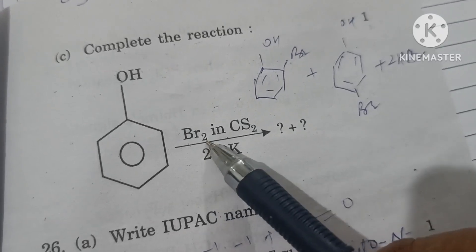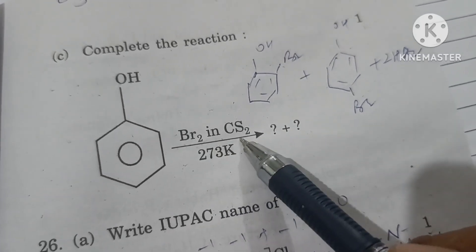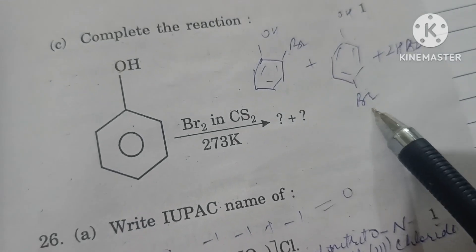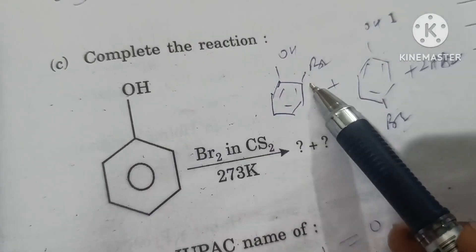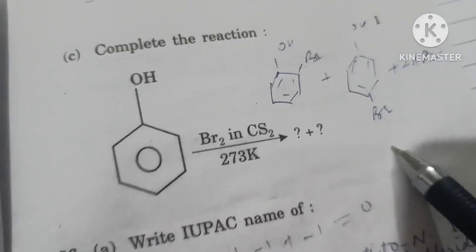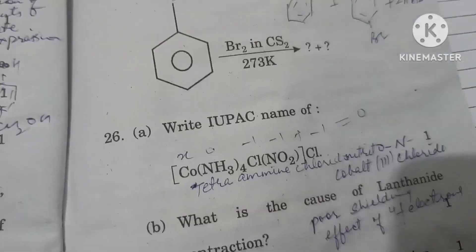Phenol, when we react with bromine water in carbon dioxide, gives monosubstitution at ortho and para positions. Ortho-bromophenol and para-bromophenol form along with HBr.